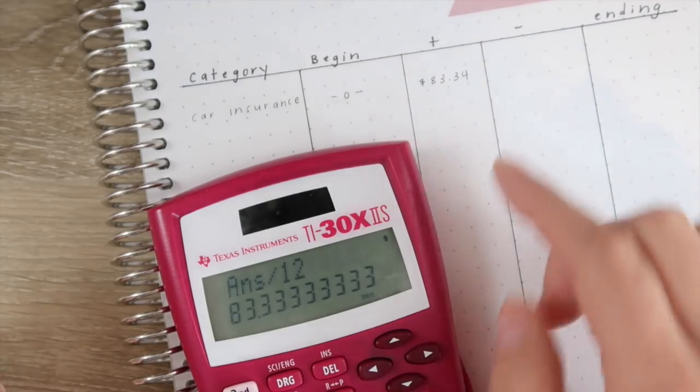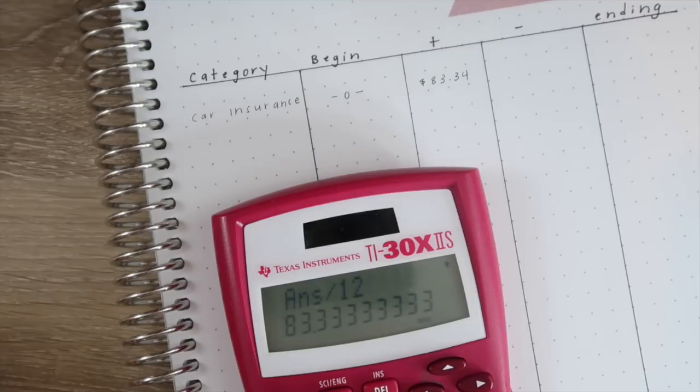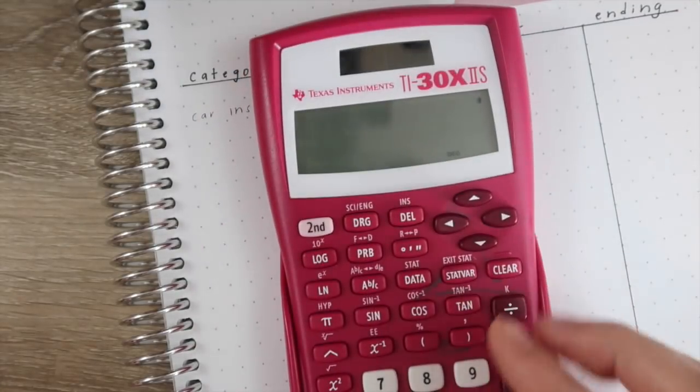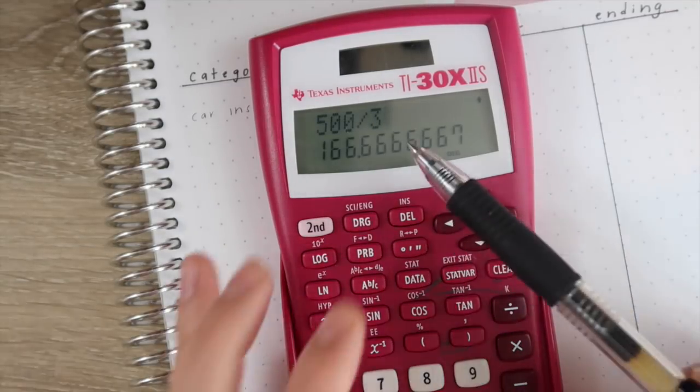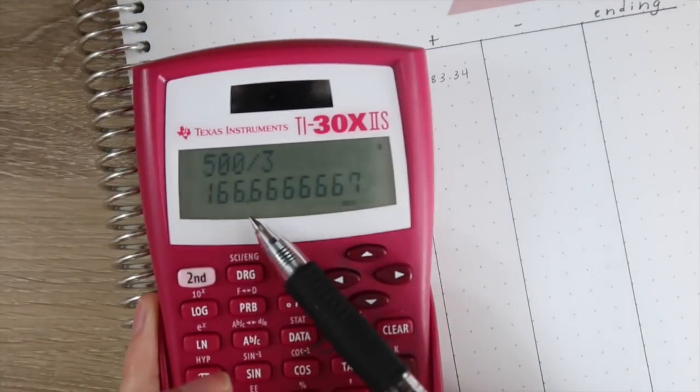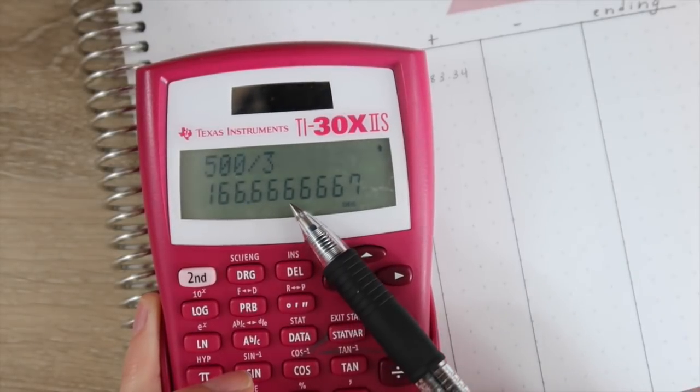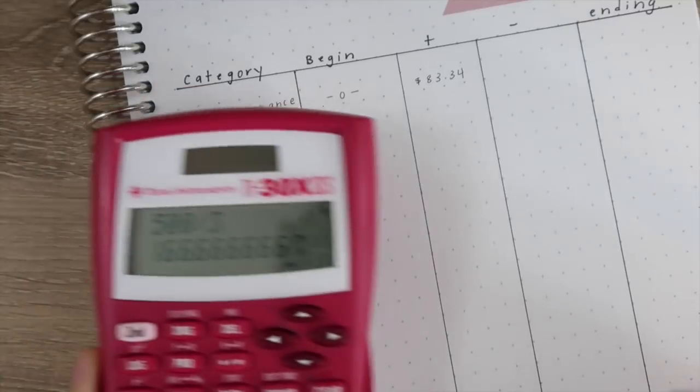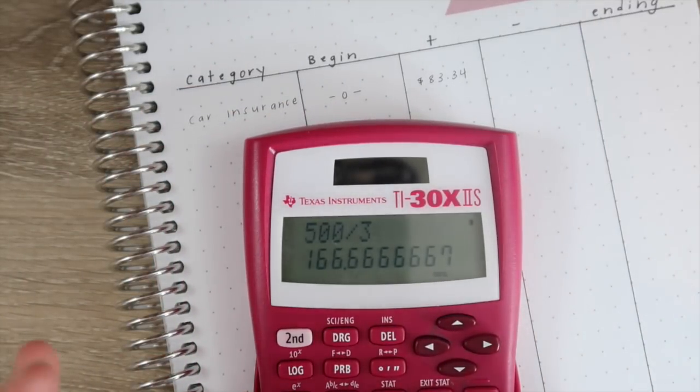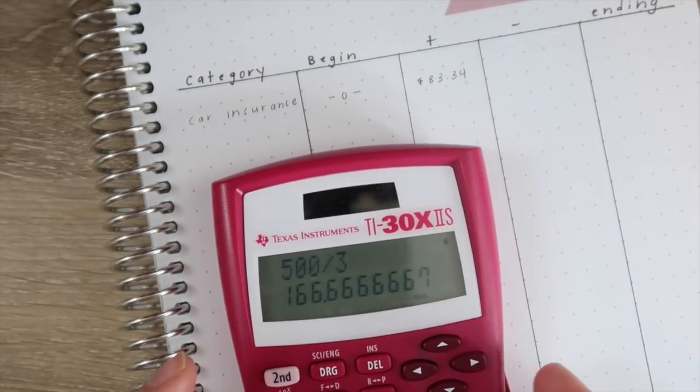Now this would change, let's say your car insurance is due in three months and you owe $500 in three months. Then your first amount in would have to be $166.67 instead of $83.34. So really it just depends on when you're starting and when the amounts are due.